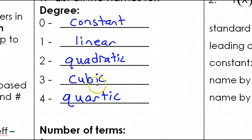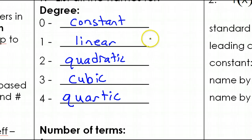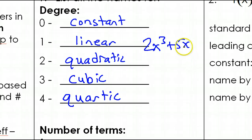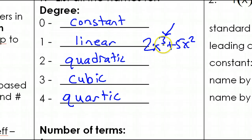Memorize that. Remember, as far as degree goes, it's all about the highest power. So if I have 2x to the third power plus 5x squared, the degree is 3 because that's the highest power. And that would make this cubic.